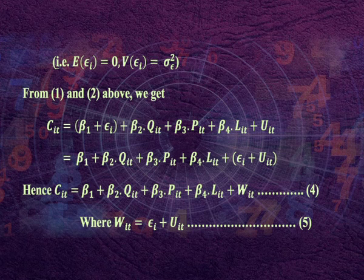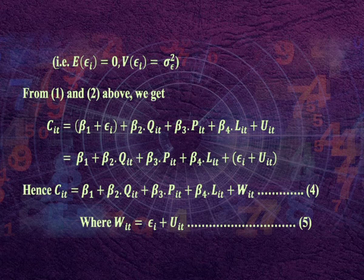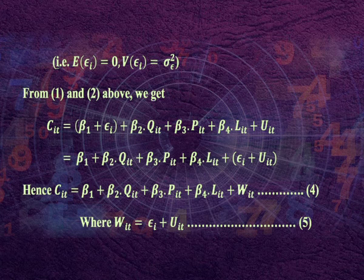From equations 1 and 2, we get: C_it = β₁ + εᵢ + β₂Q_it + β₃P_it + β₄L_it + U_it, which equals β₁ + β₂Q_it + β₃P_it + β₄L_it + (εᵢ + U_it). Hence C_it = β₁ + β₂Q_it + β₃P_it + β₄L_it + W_it — equation 4, where W_it = εᵢ + U_it — equation 5. The model in equation 3 is called the random effects model (REM) or error components model (ECM).